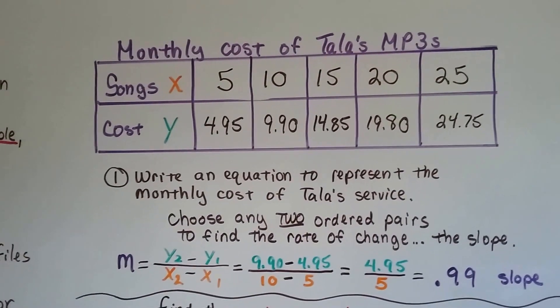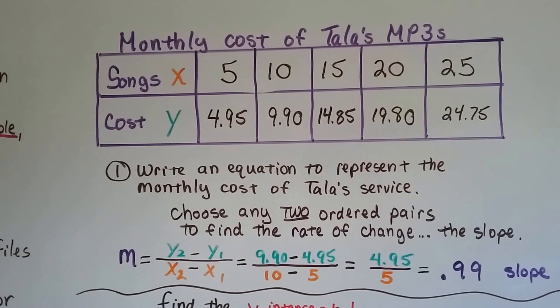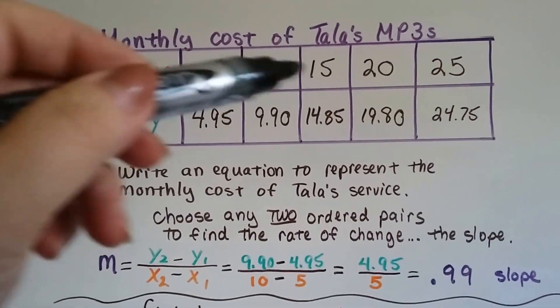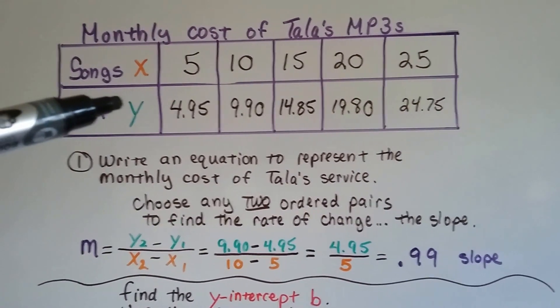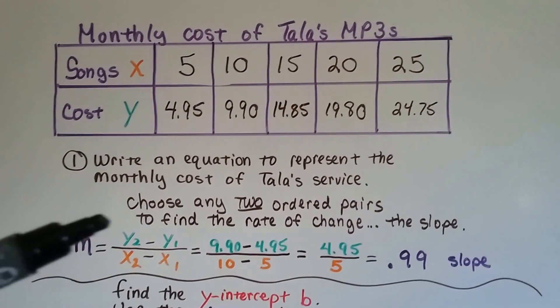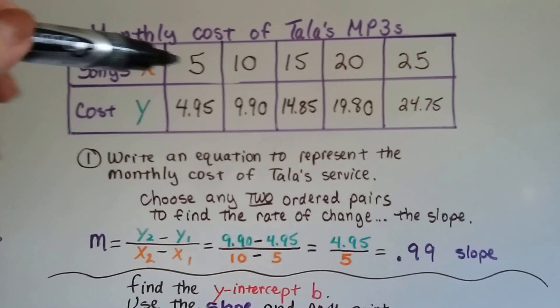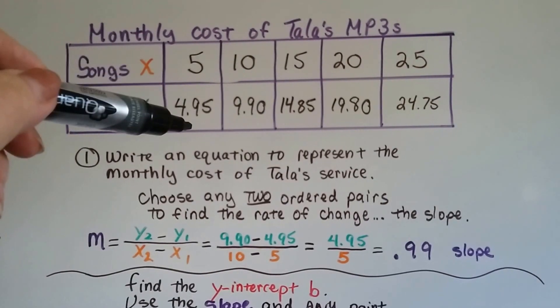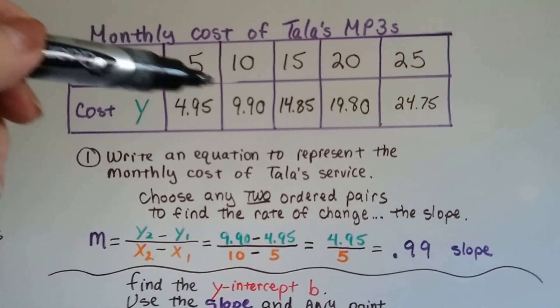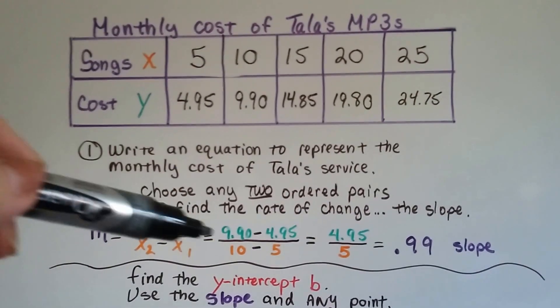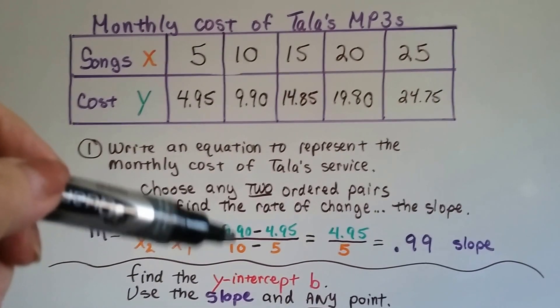We need to write an equation to represent the monthly cost of Tala's service. So we look at this table of values, and we're going to pull an equation out of this. The first thing we do is choose any two ordered pairs to find the rate of change, the slope. So I chose the 4.95 over 5, and the 9.90 over 10, as my x, y values.